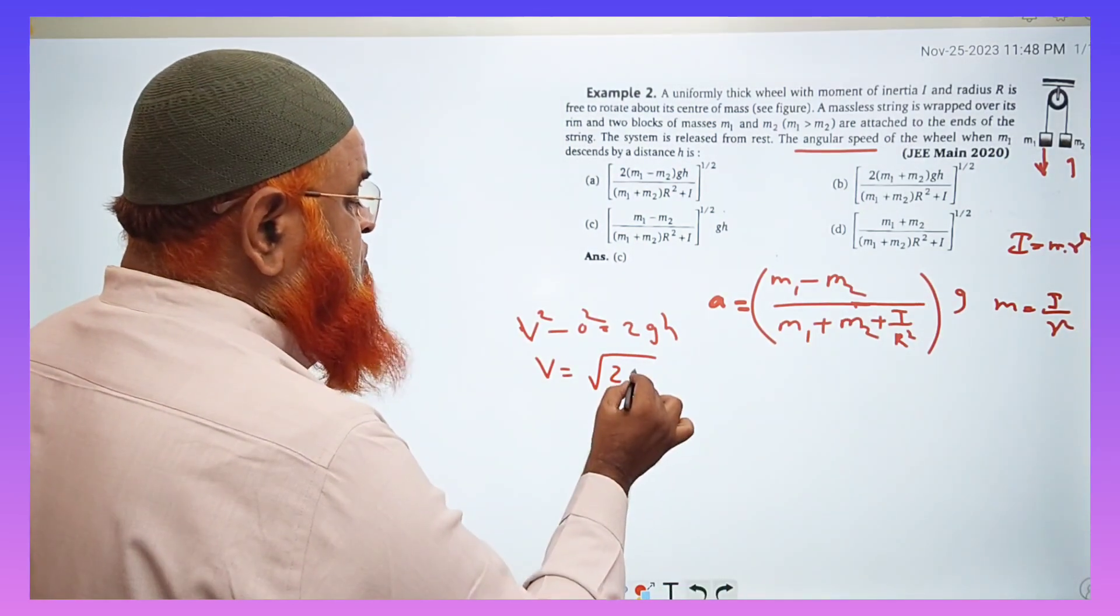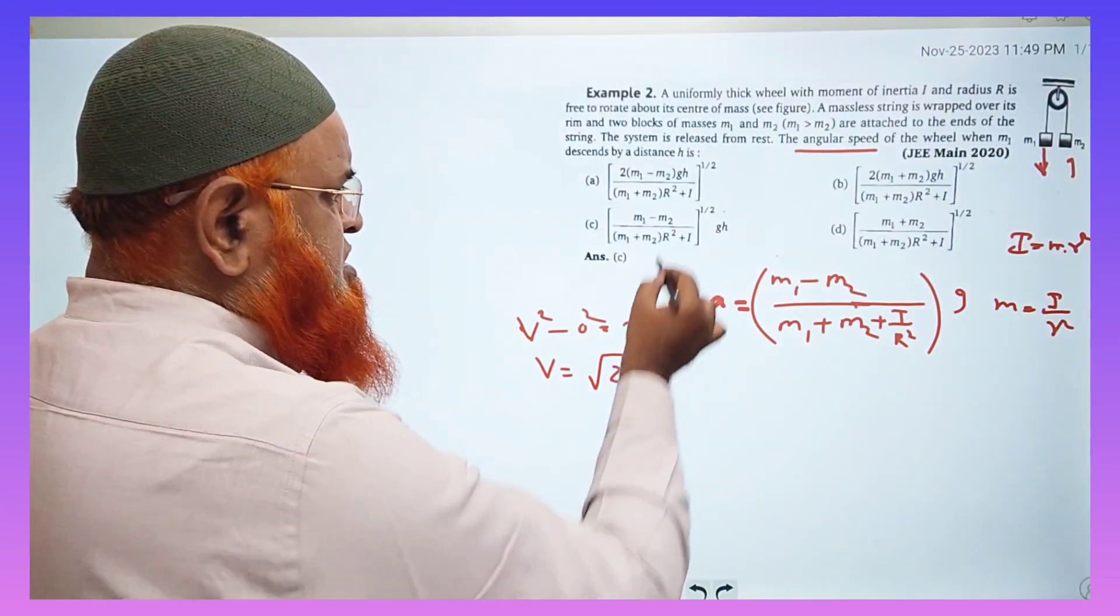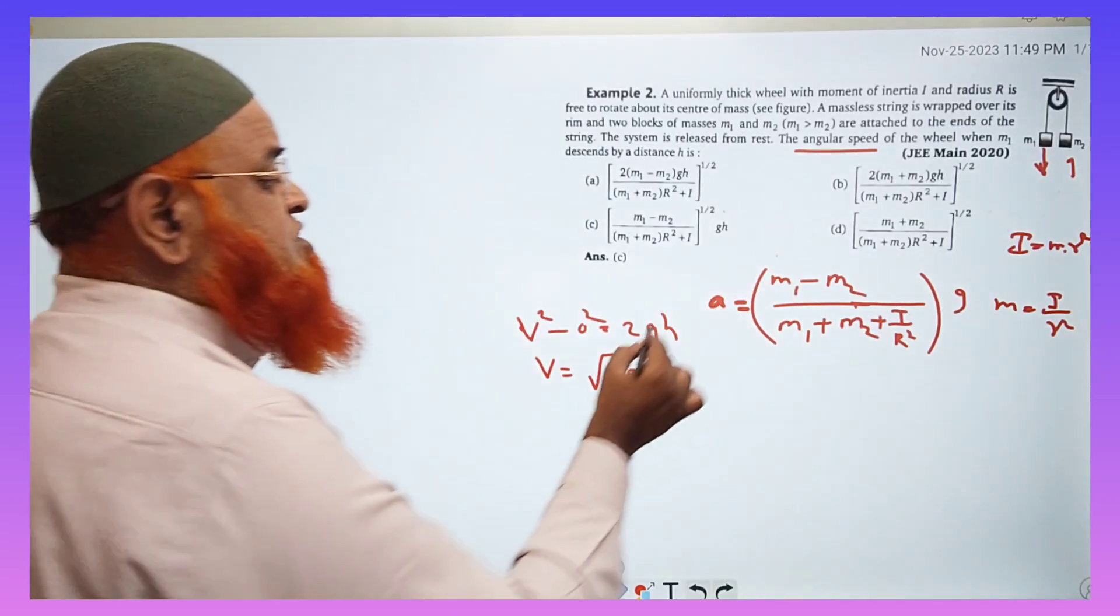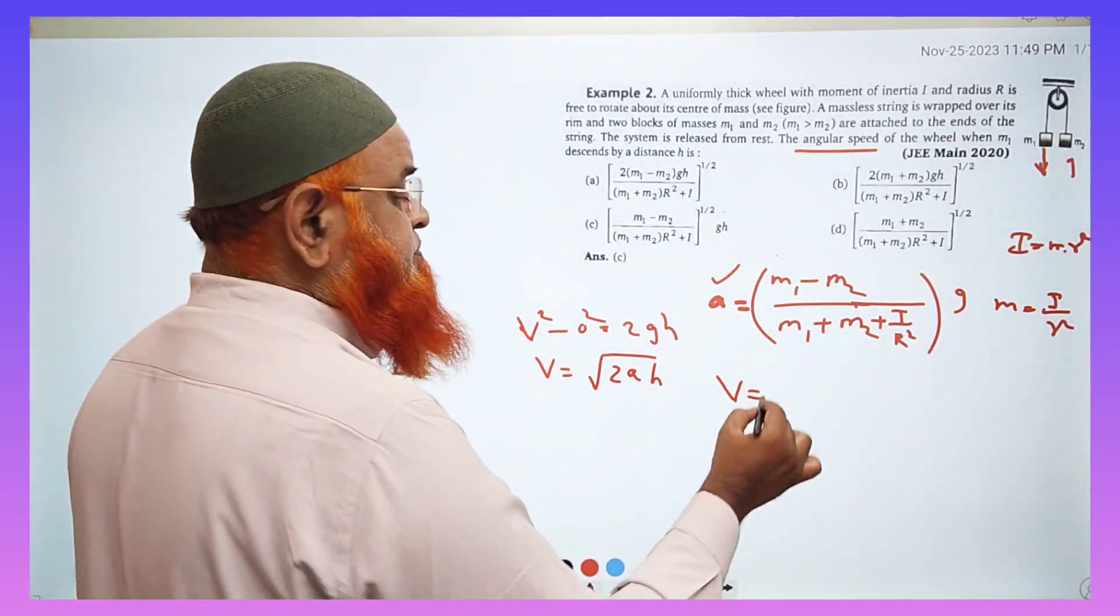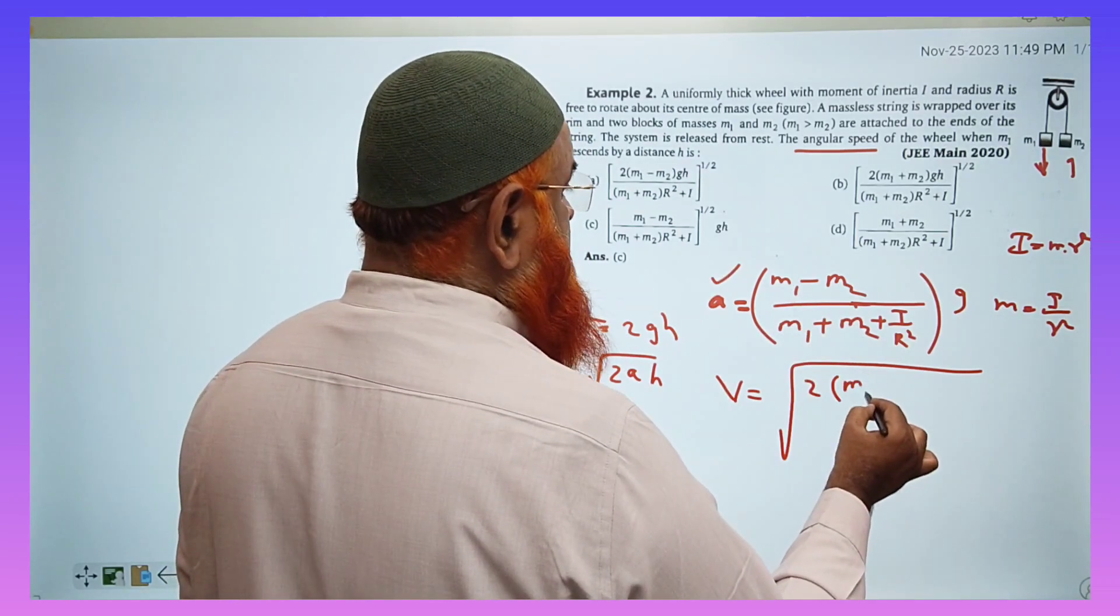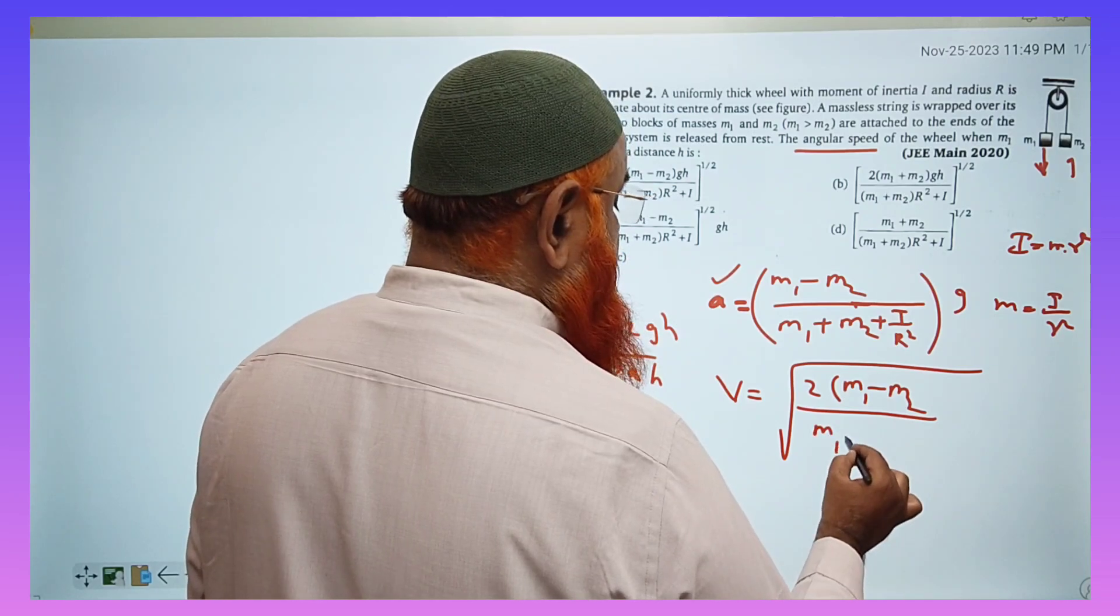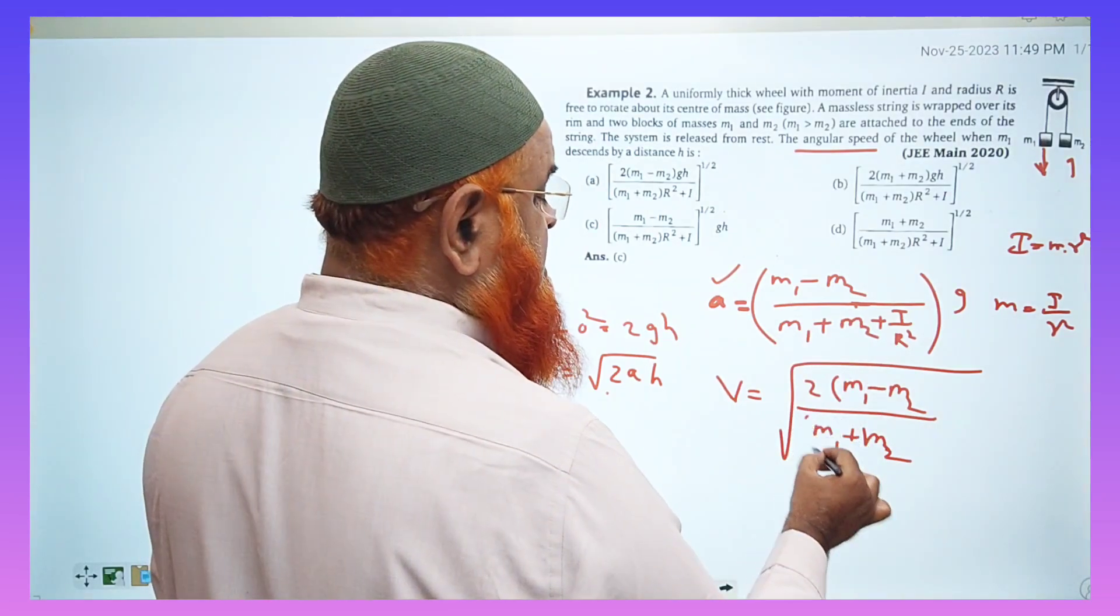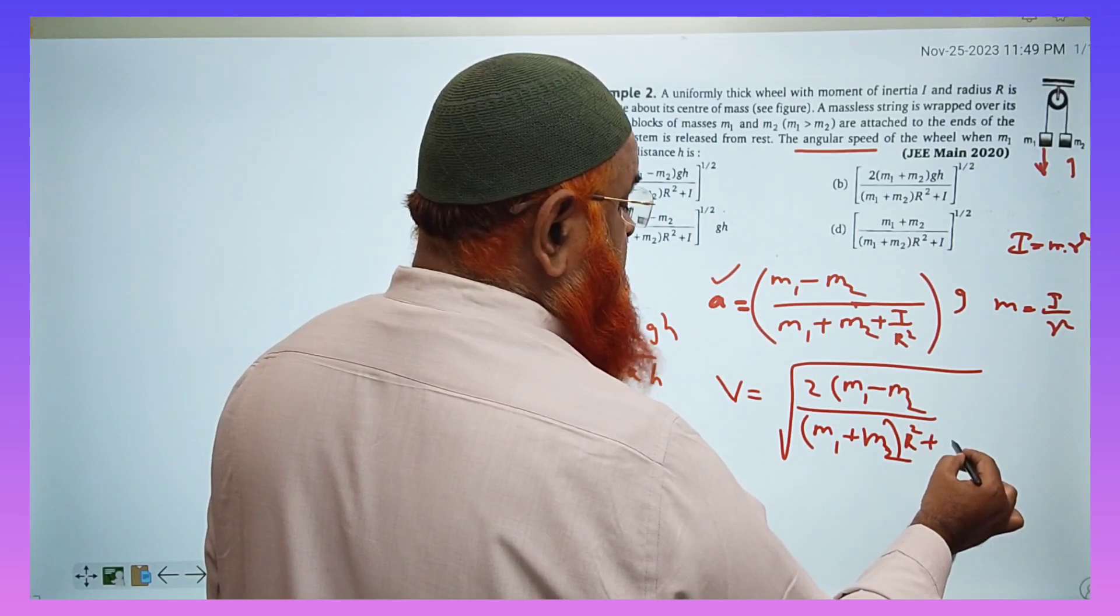But here as it is an acceleration, we write 2ah here because it is given in the problem 2ah. Then what are we going to write in place of acceleration? You write a as an acceleration. So your new solution will become square root of 2, and this we will write now m1 minus m2 divided by m1 plus m2, and this r will come here.